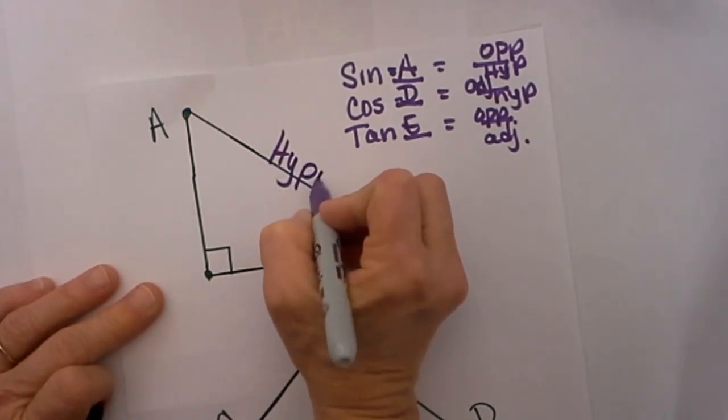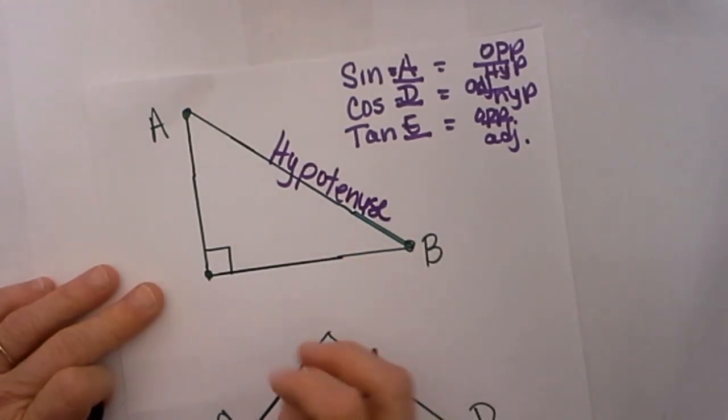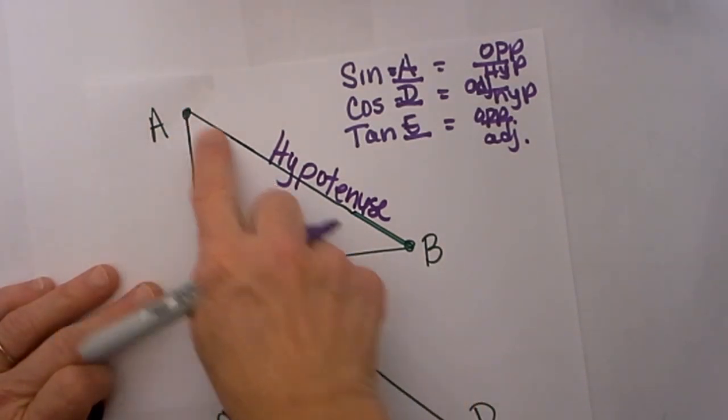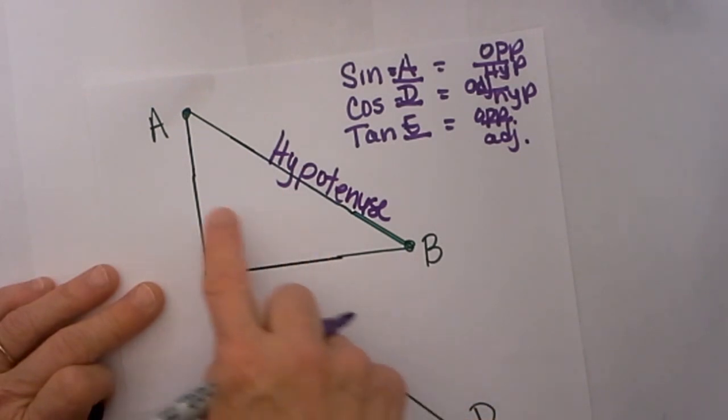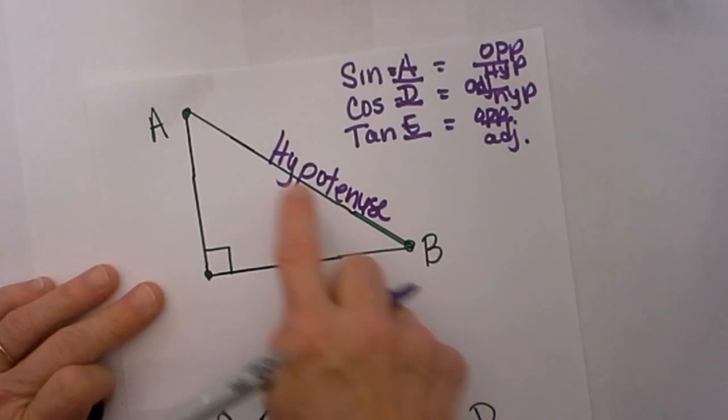I know that is my hypotenuse because it is opposite the right angle. Now your adjacent and your opposite are going to change depending on your perspective. If you are looking from A you have an opposite side and then you have an adjacent side. But if you are looking from angle B you have an opposite side and an adjacent side.